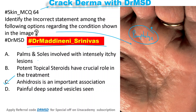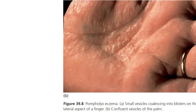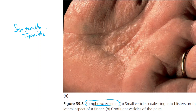Pompholyx presents with intense itching on the palms and soles, and there are also painful deep-seated vesicles which will be seen. The diagnosis is pompholyx eczema. The main features are that the lesions are going to have a sago grain-like or tapioca-like appearance, and they are going to start on the sides of the fingers.